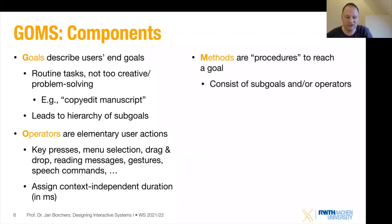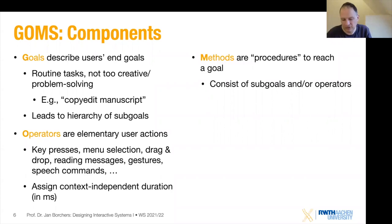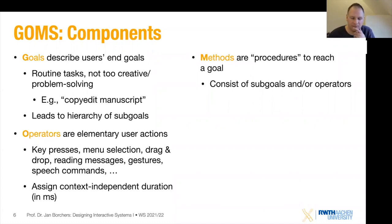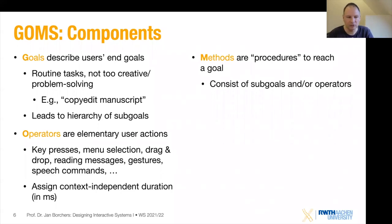In between the goals at the top and the operators at the bottom, we've got methods. Methods are procedures to reach a particular goal. For example, to move some text around, I need to highlight it first — clicking at the beginning, at the end, dragging to the target location, and so on. These methods can be recursive, consisting of sub-goals that are themselves more methods. It's kind of like methods in a programming language — you end up with the basic operators as the fundamental statements of the model.